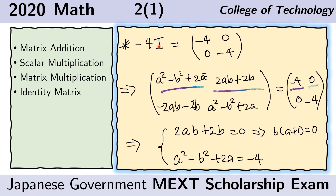For the right side of the equation, we again substitute the value for the identity matrix, and this is what we obtain. The left side, from the previous slide, equals this from the right side of the equation here. And now we notice that we will have 4 different equations.